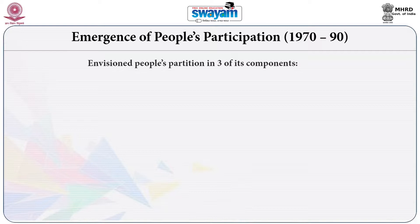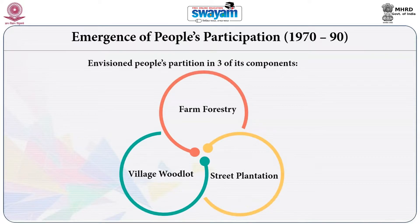The Social Forestry Program emphasized developing village forests and envisioned people's participation through three components: farm forestry, village wood lots, and street plantation. Farm forestry focused on converting non-agricultural private lands into forest lands, giving incentives to large farmers to create their own forests. Village wood lots emphasized creating forest on village common land for use by the local community, while street plantation focused on planting trees on both sides of streets.